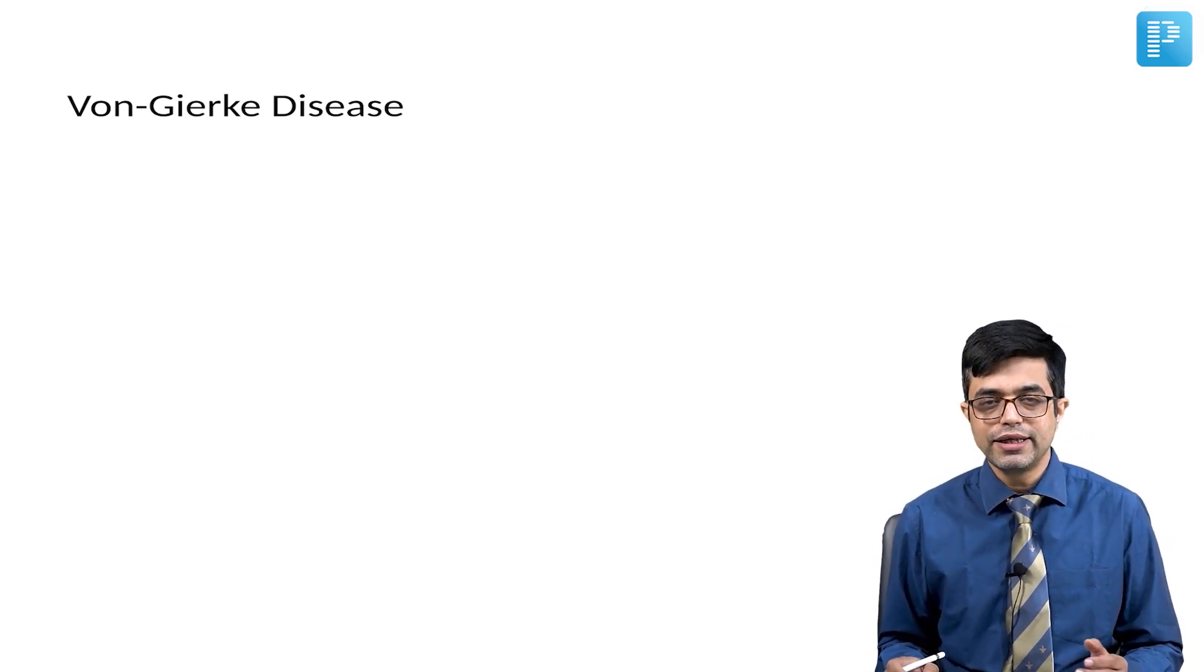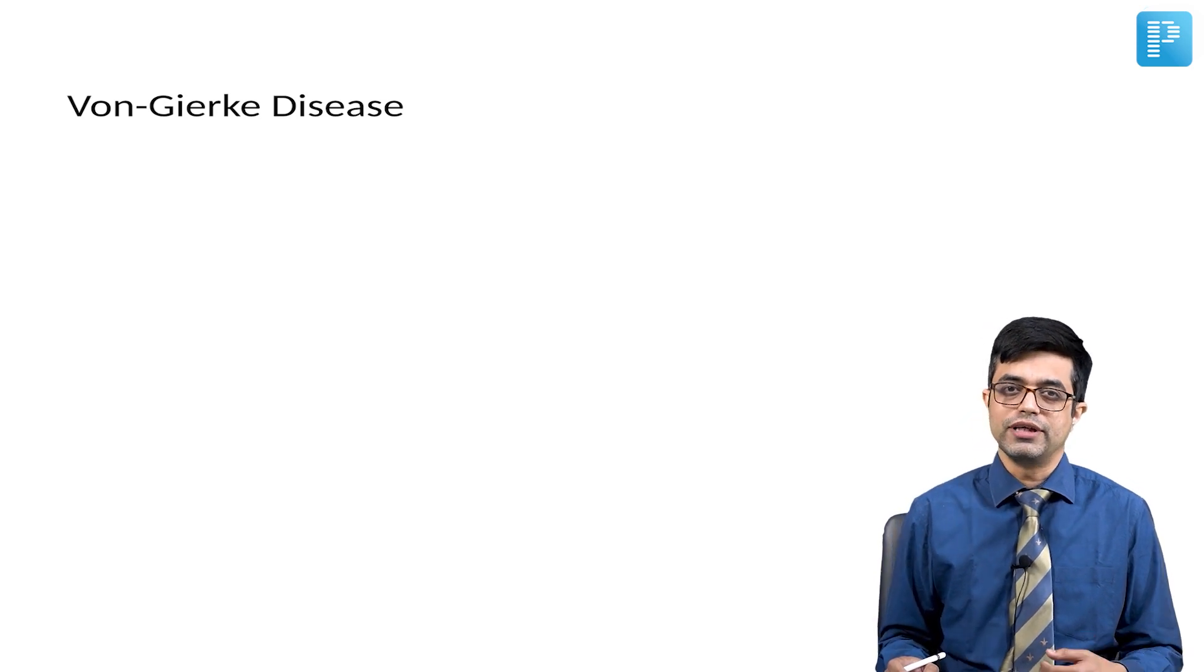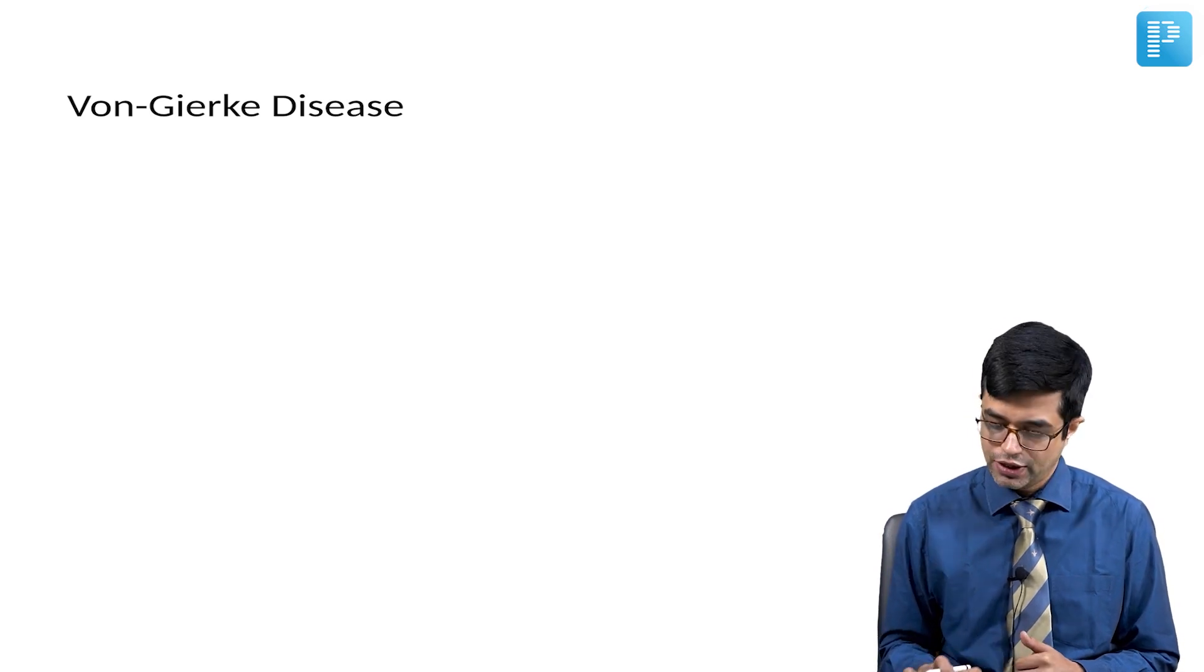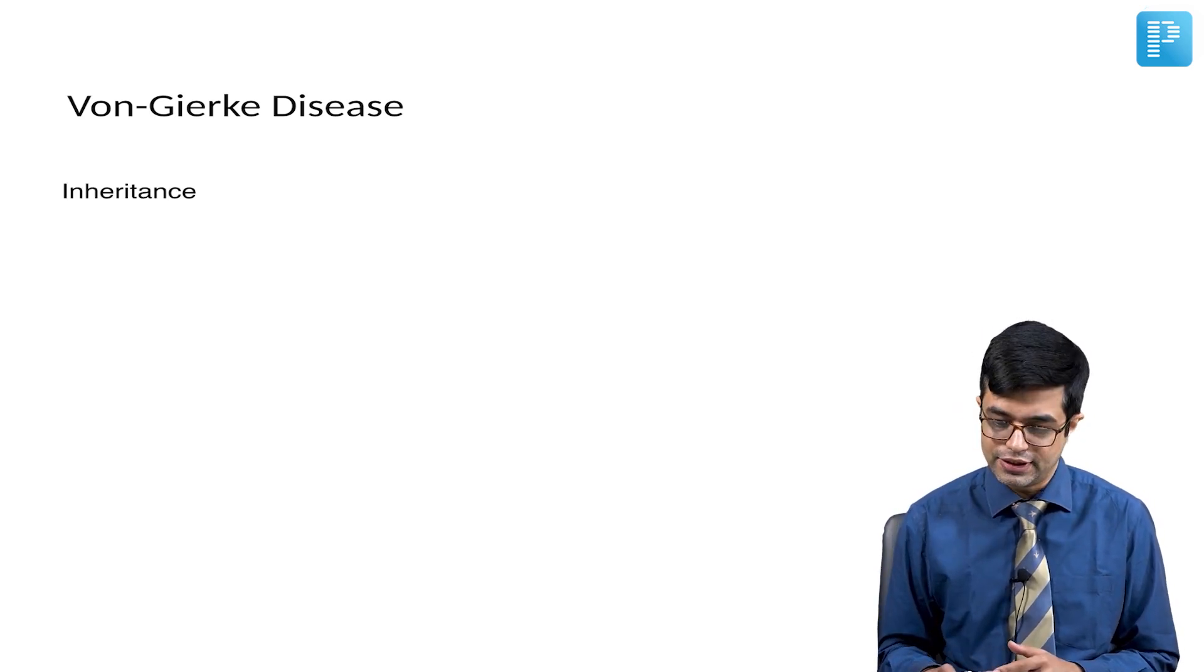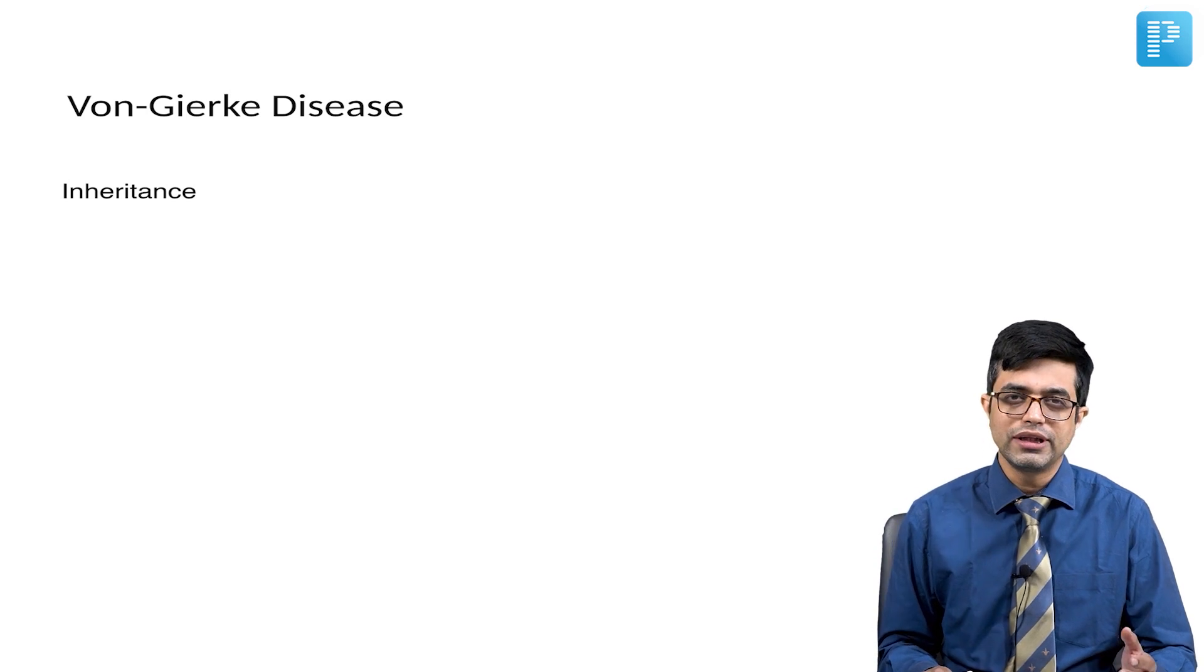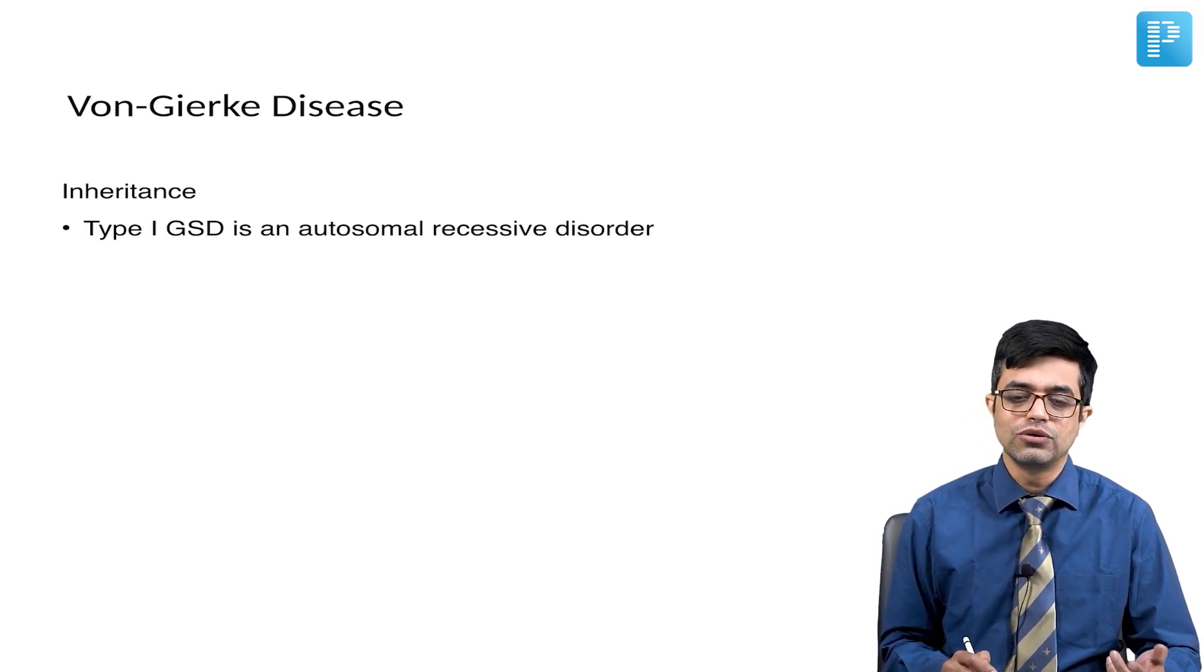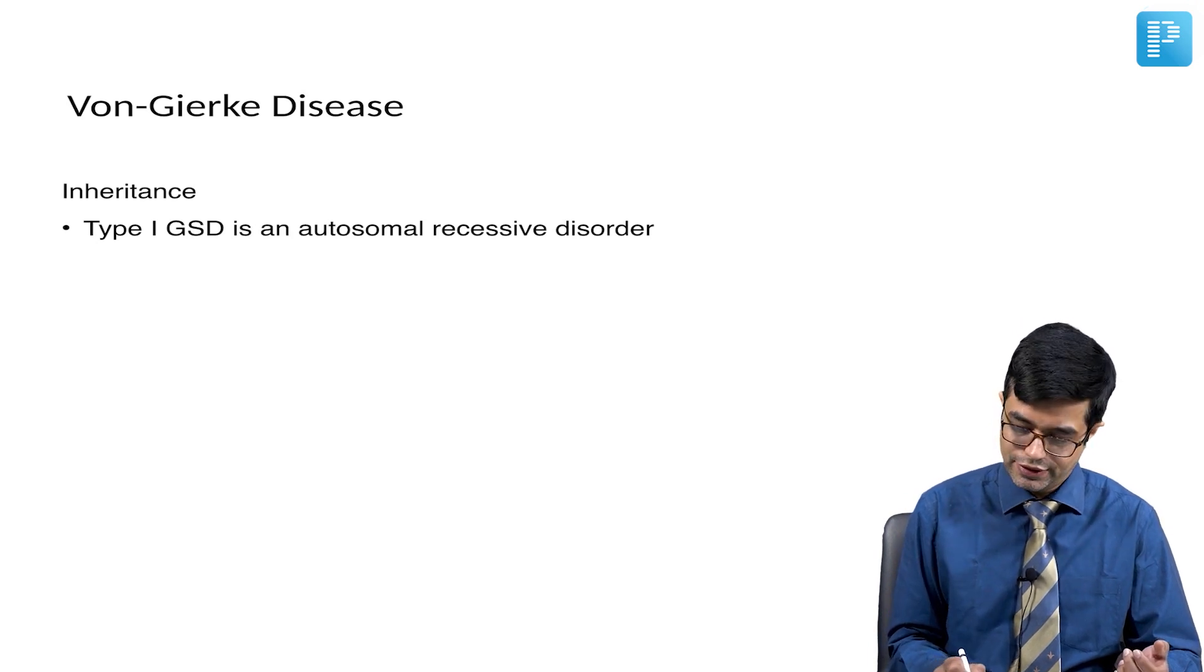It is one of the earliest described glycogen storage diseases, and in the classic form there is deficiency of glucose 6-phosphatase enzyme. What is the inheritance of this disease? As I have already told, all the GSDs show autosomal recessive inheritance, and so this is also an autosomal recessive disorder.